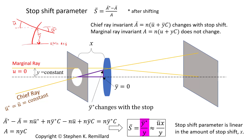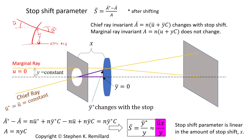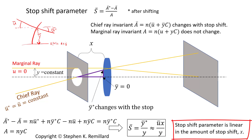A little trigonometry, looking at this triangle, gives the height of the chief ray after stop shifting in terms of X (the amount of stop shifting) and U-bar (the angle of the chief ray), in the small angle approximation. This tells you that the stop shift parameter is linear in the amount of stop shift.